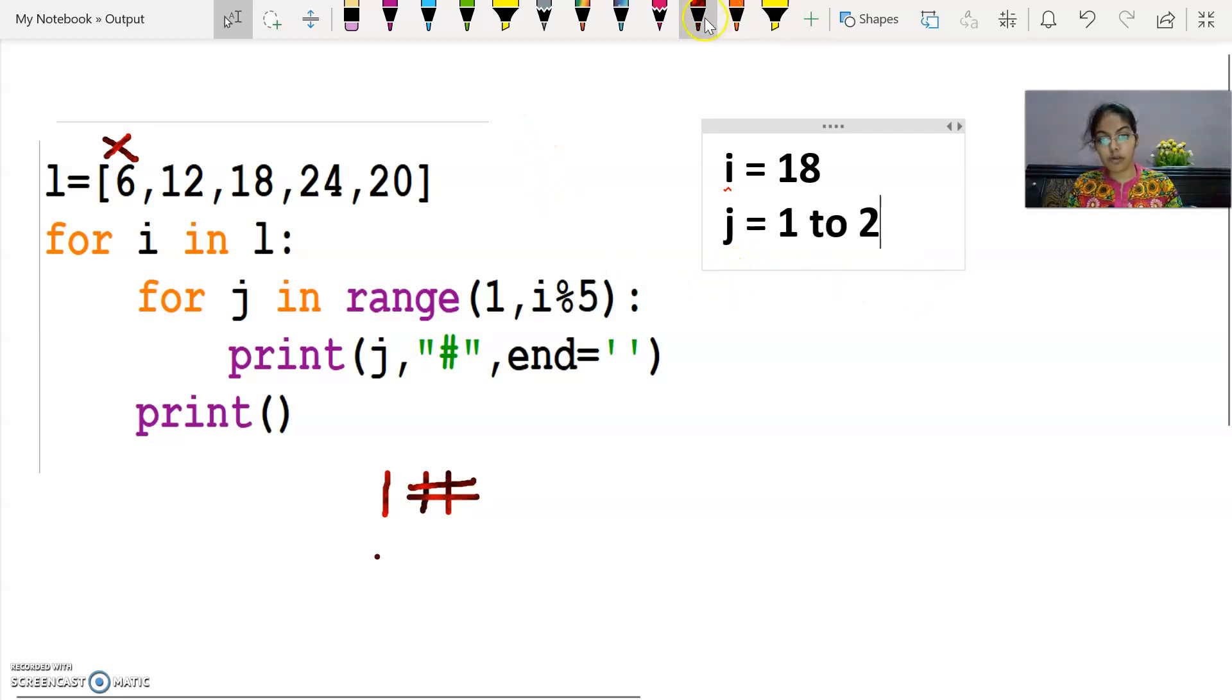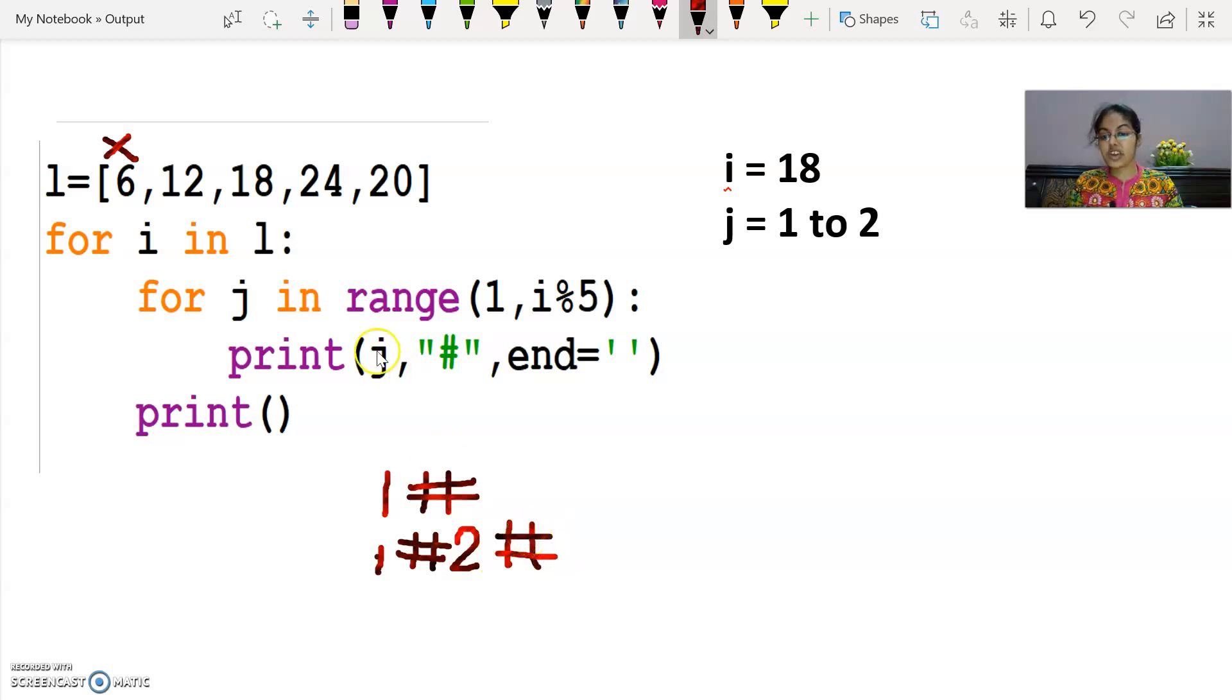So now what will be my loop's output? First what will be printed? 1. Then what will be printed? Hash. With space, note that. After that, along with it what will be printed? 2. After that what will be printed? Hash. Like this. After j there's a comma, right? So j means the value being printed, between them what will come? Space. After 1 and 2. Now print function again, so my cursor will move to the next line.